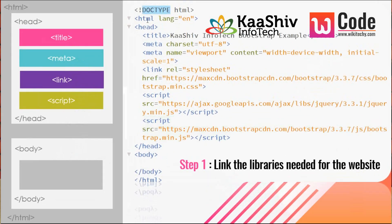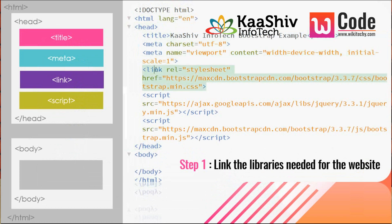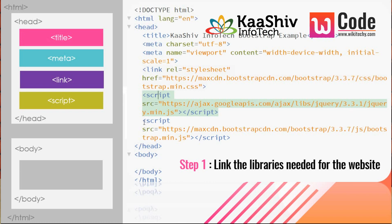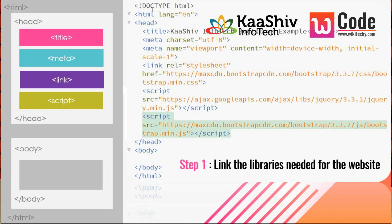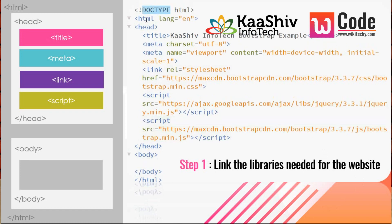Here's the sample code for creating a website. In the head tag I give the title, meta tags, linking, and scripting. I'm adding all the CDNs for the stylesheet, jQuery, and Bootstrap libraries. The content delivery network libraries are included in the head tag, and afterwards I have the body tag.